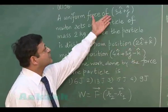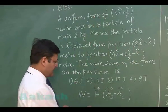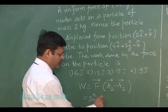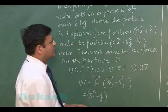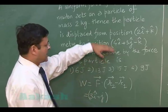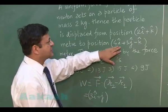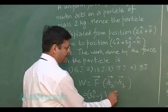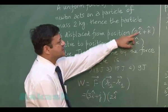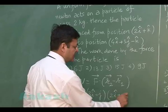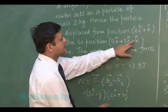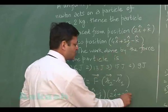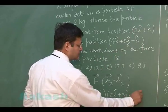The force is given as 3i + j Newton. The displacement r2 − r1 works out as: 4i − 2i = 2i, 3j − 0 = 3j, and −k − (+k) = −2k.